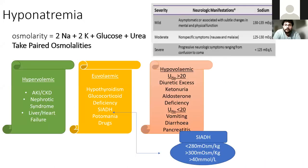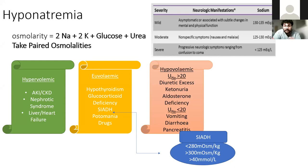The key thing whenever you get someone with hyponatraemia is to clinically assess the patient. Don't just look at the number — look at their fluid status to determine what the likely cause is. The fluid status is going to give you most of the answers about what to do next and what to investigate.